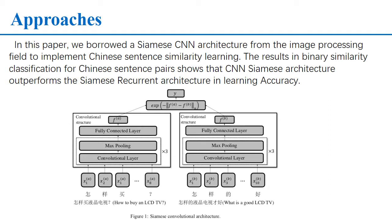Within each convolutional architecture, there is one fully connected layer after three repeated convolutional layers and max pooling layers. We also tested six repeated structures, but the accuracy did not show a significant improvement. The kernel size of each convolutional layer is different. After calculating the similarity, we use mean square error as a loss function. The two convolutional structures share the same parameters, so they can learn representations of the two sentences with the same distribution.